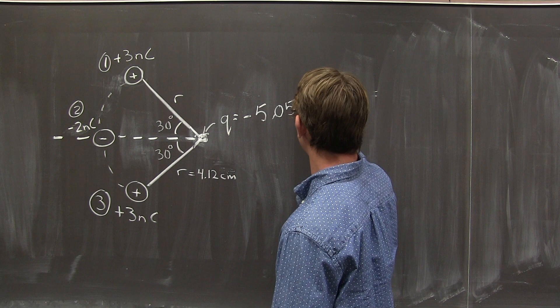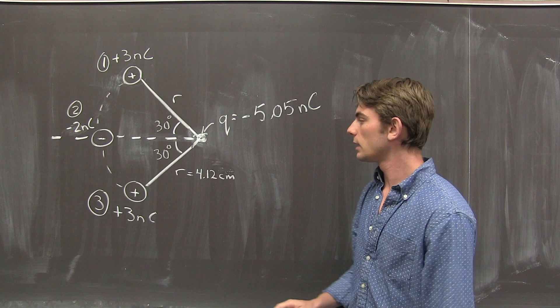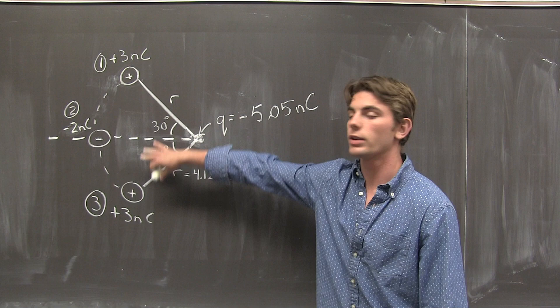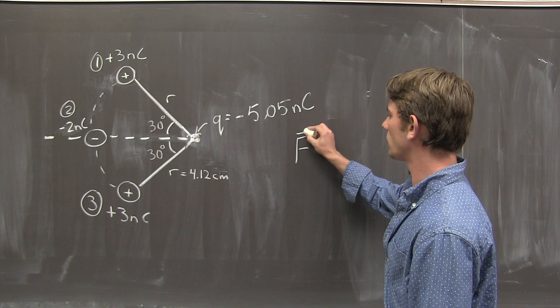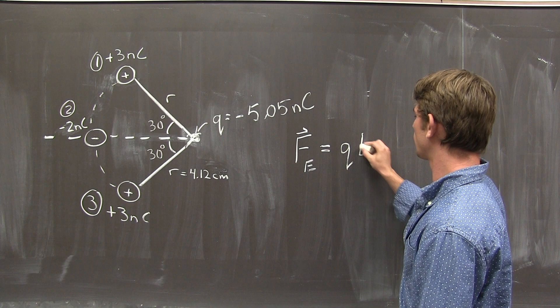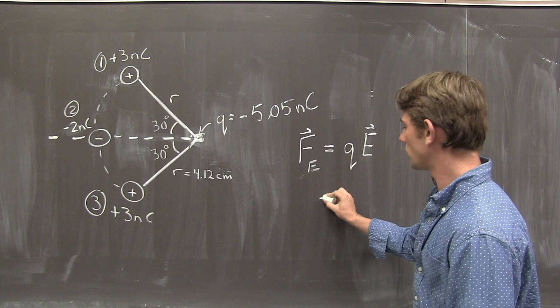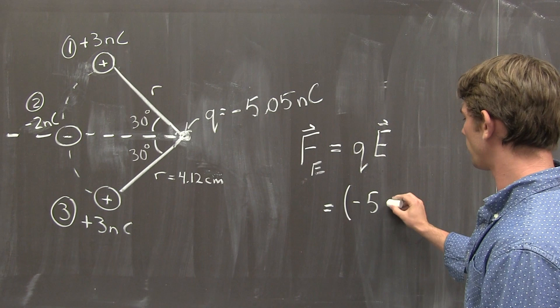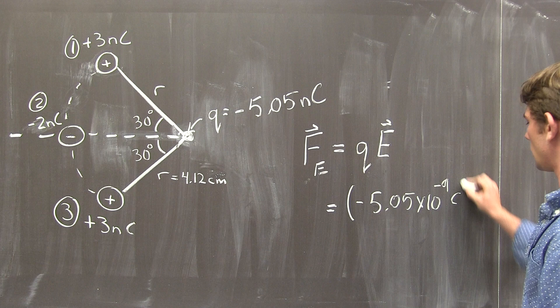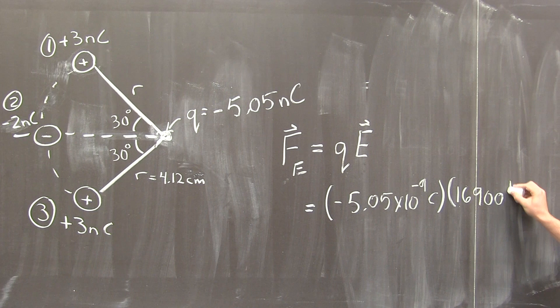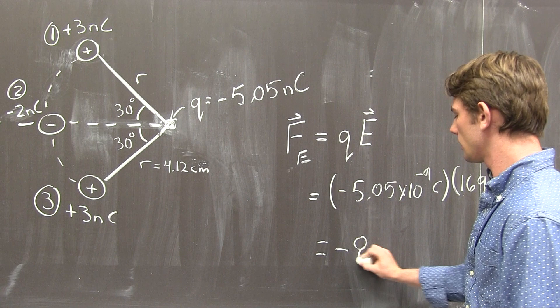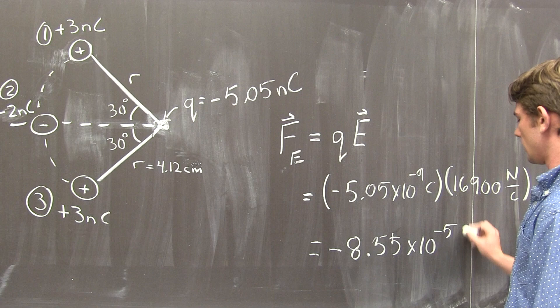And all we have to do is remember the relation between electric force and electric field. And that is that the electric force is equal to the charge we're considering times the electric field at its location. So plug in and chug in, we see that the electric force is just little q, negative 5.05 times 10 to negative 9 coulombs, times e which we found was 16,900 Newtons per coulombs. And this ultimately gives a value of negative 8.55 times 10 to the negative 5 Newtons. That's the force that this charge little q feels at this location p. Thanks for watching, we'll see you next time.